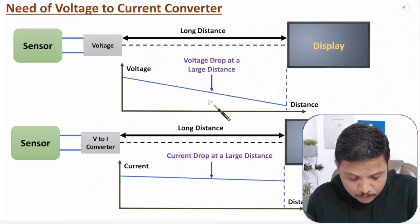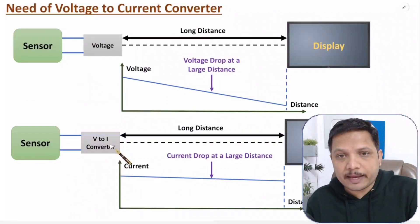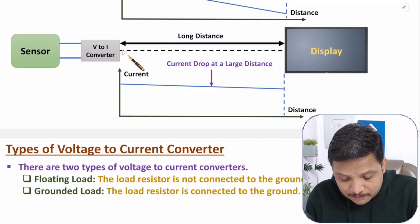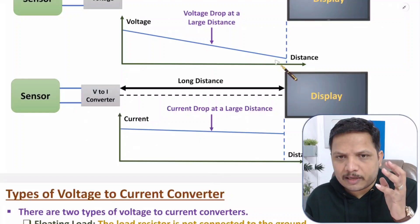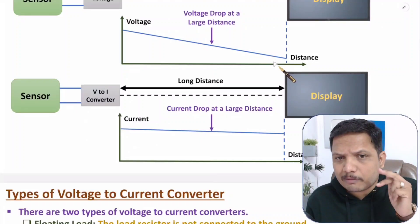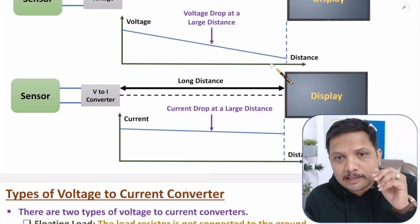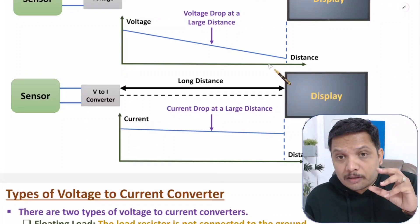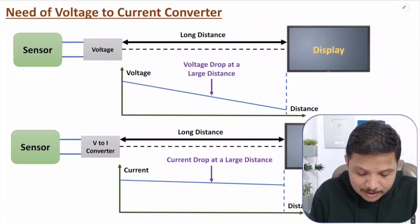So what we do is use a V2I converter. If you convert voltage to current, then at the output side we have current. That current has very minimal loss when transferred over a longer distance — current decay is negligible compared to voltage decay. That is the basic need for a V2I converter.